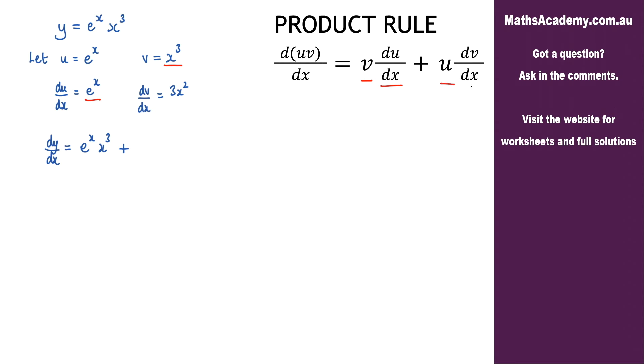Plus u multiplied by dv by dx. So u and dv by dx, which is e to the x, and then we'll have the 3 and we'll have x squared.